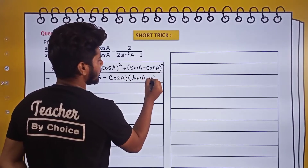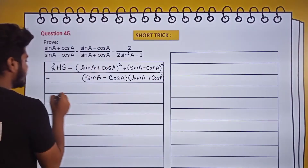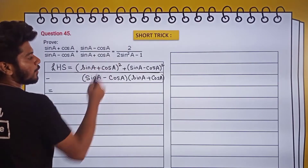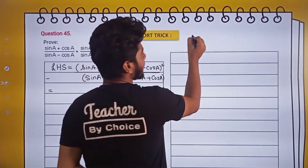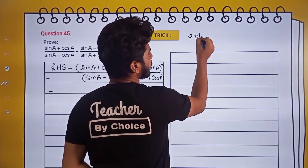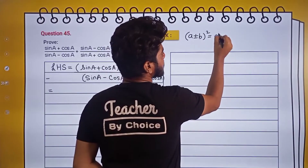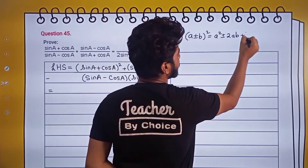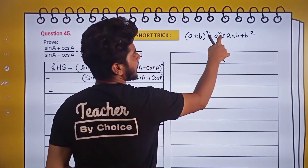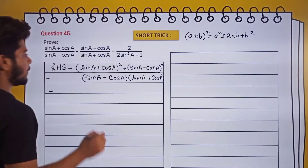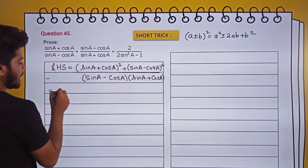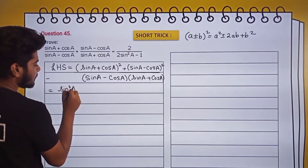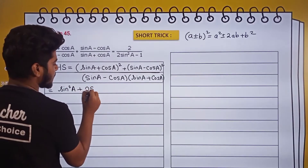Now what we will do is apply the (a ± b)² formula. If you remember, (a ± b)² = a² ± 2ab + b². If it is plus we write plus, if it is minus we write minus. Applying the formula for the plus term: sin²A + 2sinA·cosA...